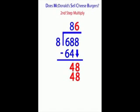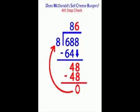Next, we multiply. 6 times 8 equals 48. Then we subtract. 48 minus 48 equals 0. Now we check. Is the 0 smaller than the 8? Yes, it is.